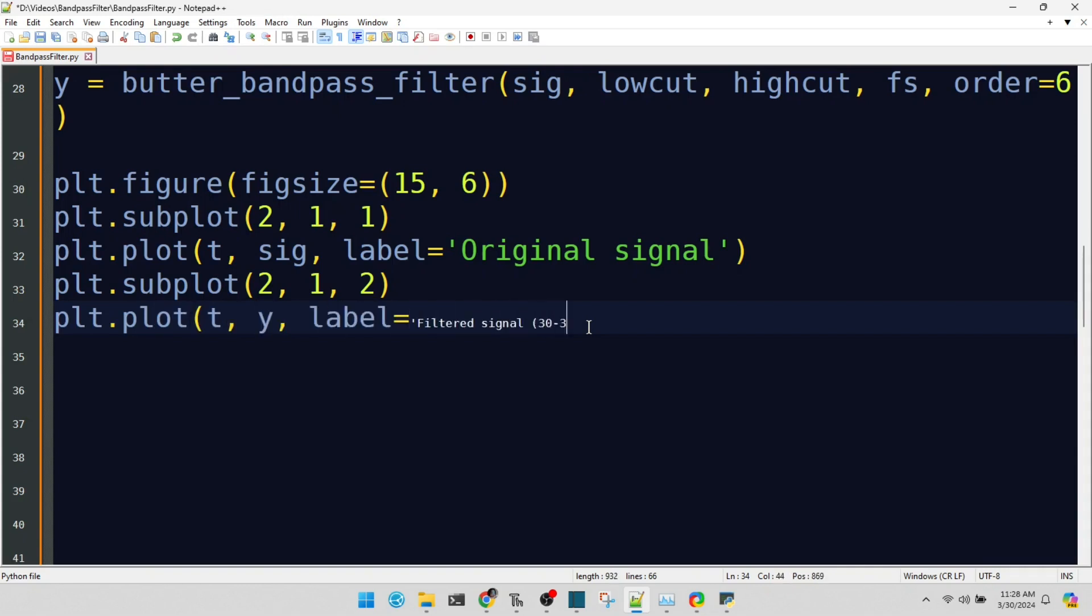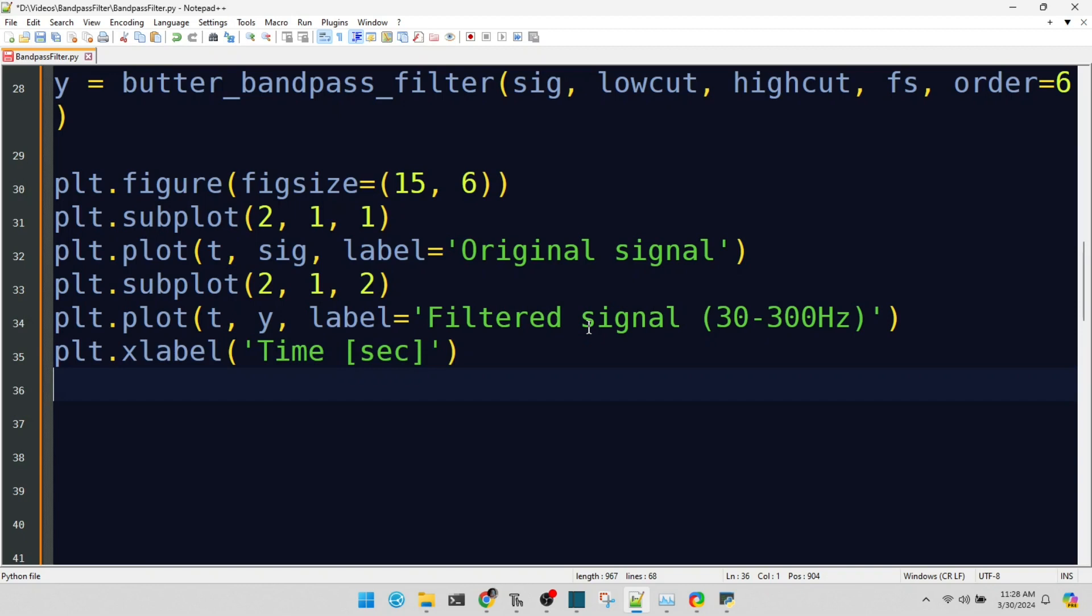We're labeling our X axis as time in seconds. It's always good to label your axes for clarity. Adding a grid to our plot for better readability. It's all about making our data easy to interpret.